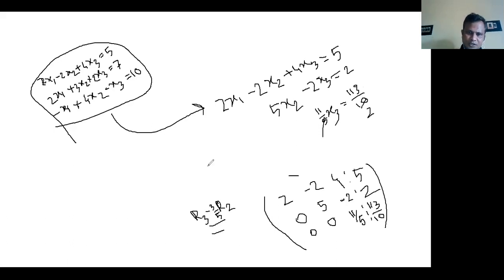The solution of x3 is 113 divided by 22. So when we put the value of x3, it's only 113 divided by 22.